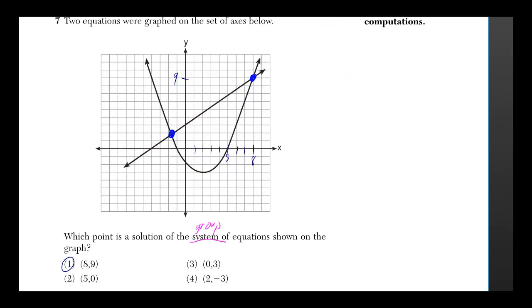And those points are (8,9) and the other one doesn't matter since (8,9) is already there, but it's negative 1.75 something. But again, there's nothing even close to negative 1.75, so you just go with (8,9).